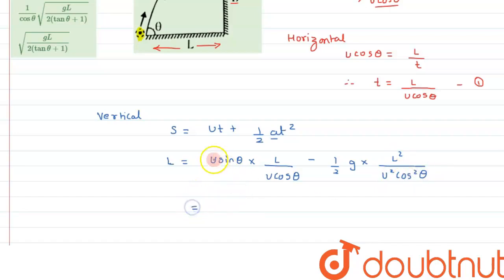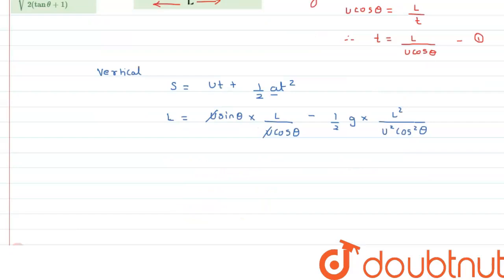All right, so if we solve it a bit further, u will get cancelled. So here we are left with L. L from both sides can be cancelled out. So we are left with 1 equals tan theta minus gL divided by 2u squared cos squared theta. We are interested in finding the value of u squared, therefore we can say...